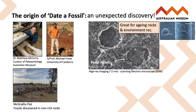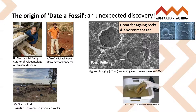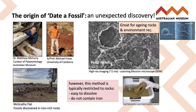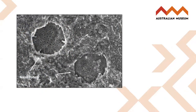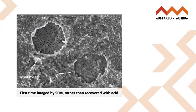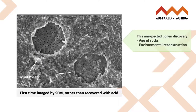Ancient pollen is well known to aid researchers in both dating rocks and reconstructing the ancient environment. Traditionally, pollen has been extracted from rocks by dissolving them in acid. However, this method is typically restricted to rocks that are easy to dissolve and do not contain iron. So when the pollen was observed in this SEM image, it came as a surprise — it was the first time pollen had been imaged in rocks rather than recovered by acid. This unexpected discovery meant we had a way to both date the rocks and understand more about the past environment.